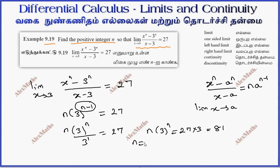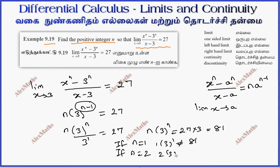If n = 1, then 1 into 3 power 1 equals 3, which is not equal to 81. If n = 2, then 2 into 3 power 2 equals 18, which is also not equal to 81.